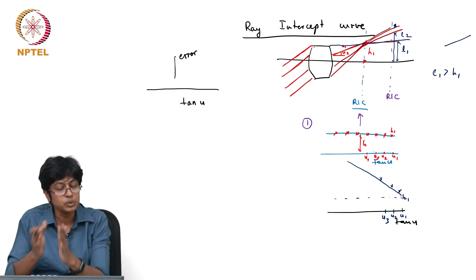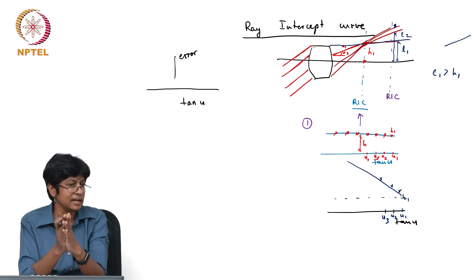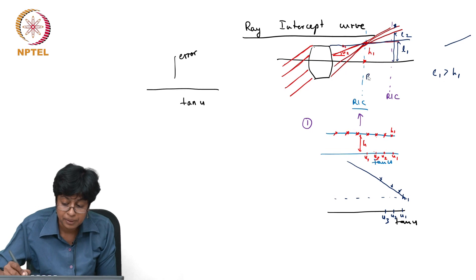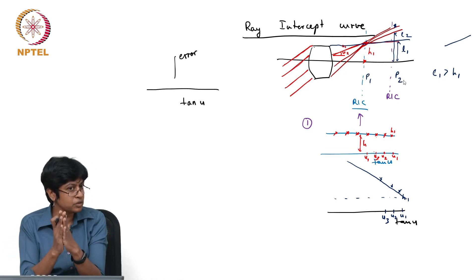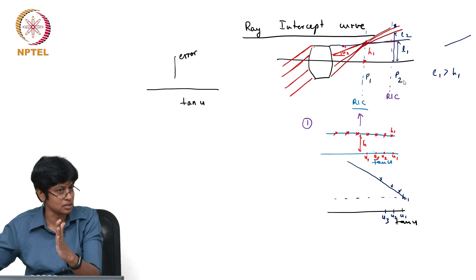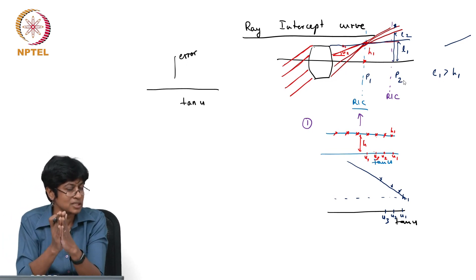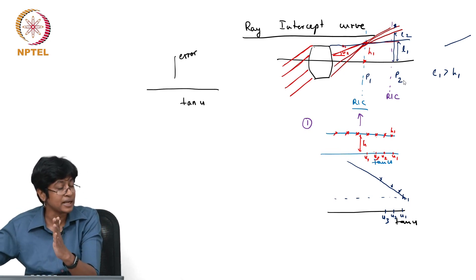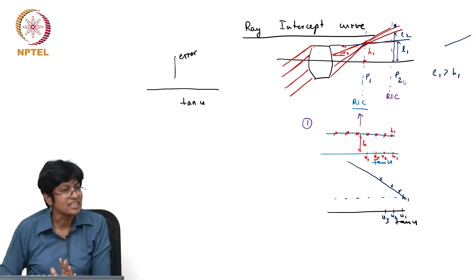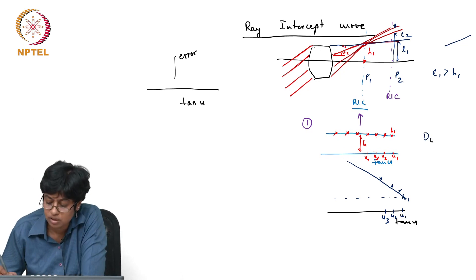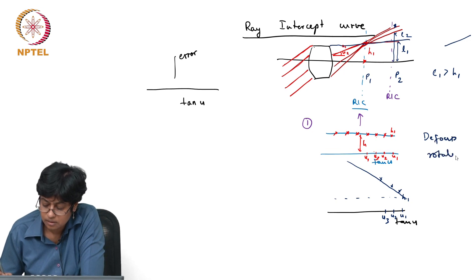Defocus, what have you done by moving your image plane from this plane P1 to this plane P2? What have you done? You have defocused. P1 was the plane where the best focus happened, but instead of looking at P1 you looked at a different plane, and what did that do to the RIC curve? It just rotated the RIC curve. So defocus rotates the RIC curve.